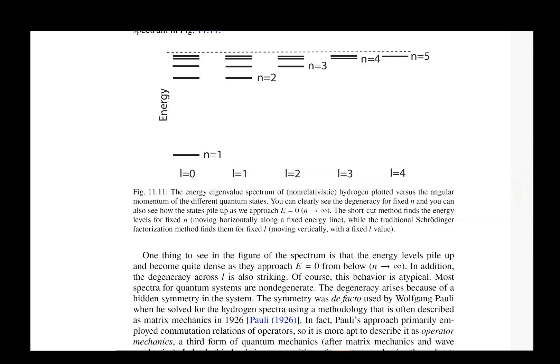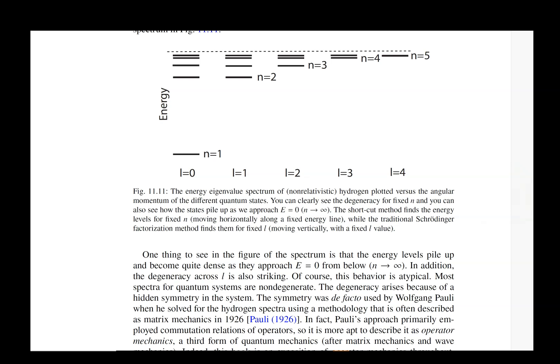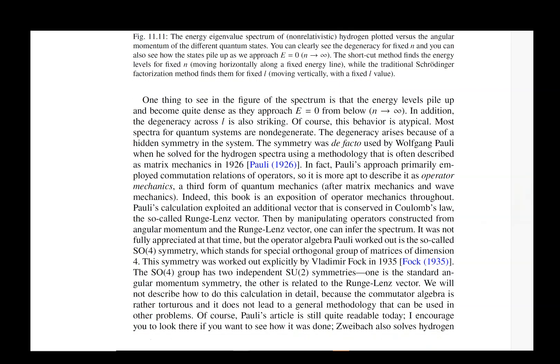This spectrum has a lot of symmetry to it, and that symmetry arises because the hydrogen atom has a lot of symmetry. It actually has a full SO(4) symmetry rather than just the SU(2) symmetry, and that's what leads to this extra degeneracy.